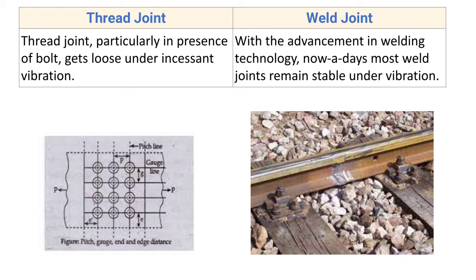Thread joint, particularly in the presence of bolts, gets loose under incident vibration — there are chances of losing the bolt and nut due to vibrations. With advancements in welding technology, most weld joints nowadays remain stable under vibration. Advanced welding techniques such as laser welding, electron beam welding, and friction welding contribute to this stability.